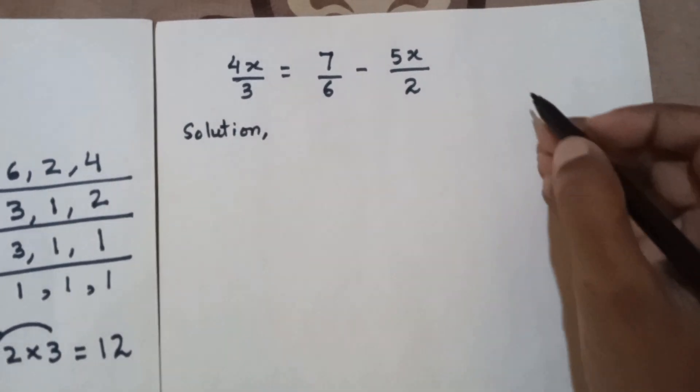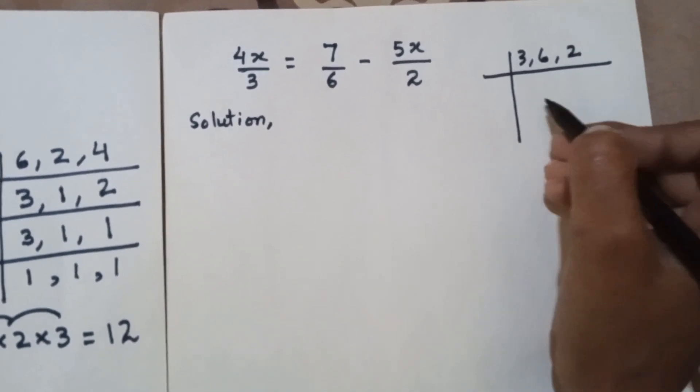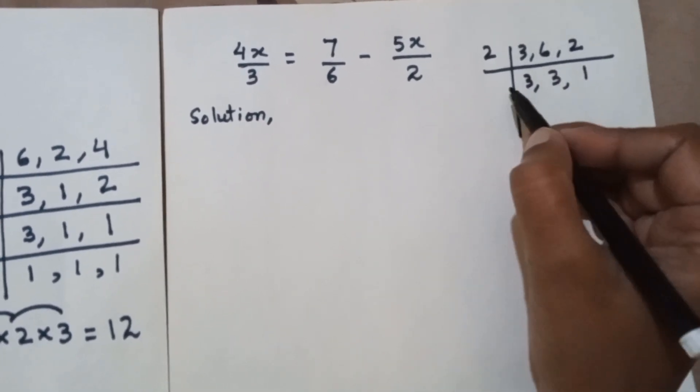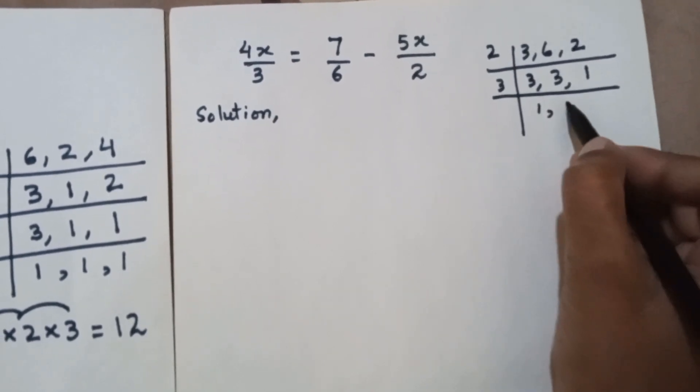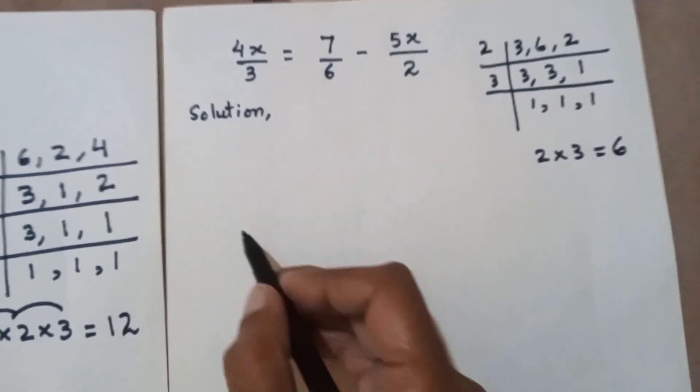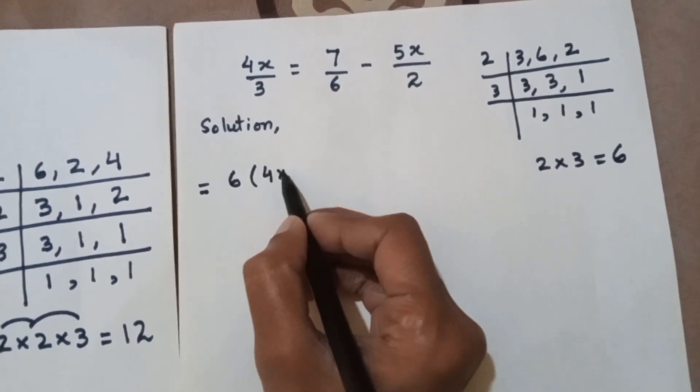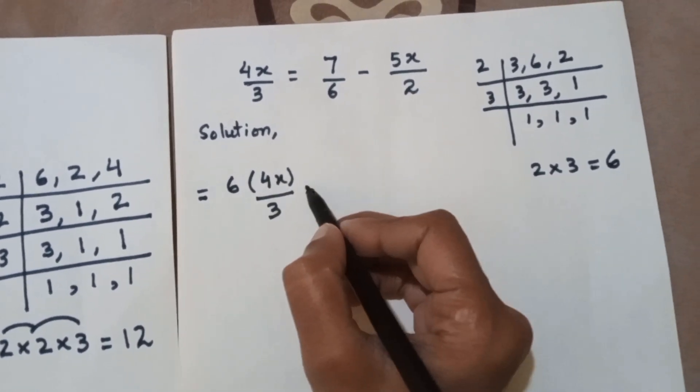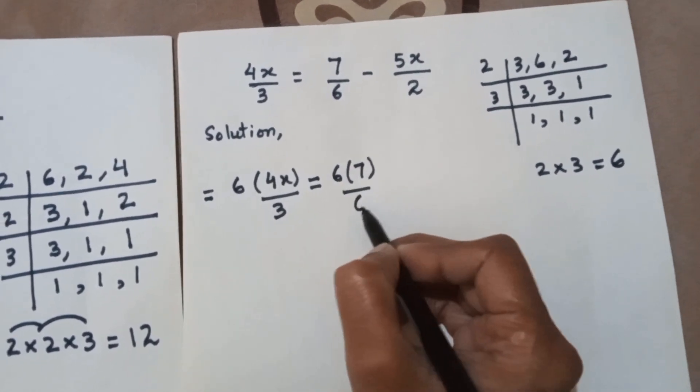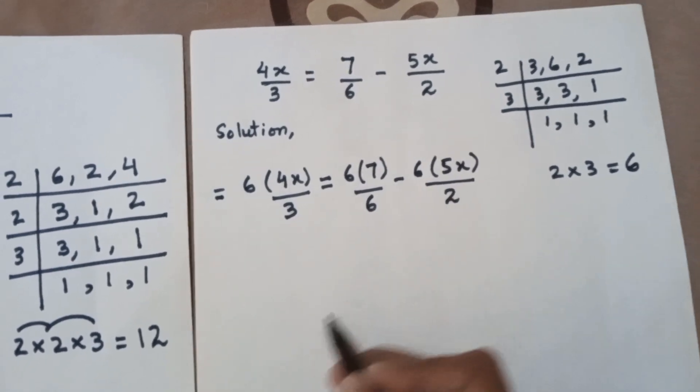Here you are given 4x upon 3 is equal to 7 upon 6 minus 5x upon 2. Here the denominators are 3, 6 and 2, so we will find their LCM. After solving the LCM, the result will be 2 multiply by 3, the prime factors, giving us 6 as the answer. When 6 is our answer, I have to multiply each term by 6. I wrote 6 and in brackets wrote 4x upon 3, is equal to, then I wrote 6 and in brackets wrote 7 upon 6, then minus 6 and in brackets 5x upon 2, meaning I have multiplied each term by 6.